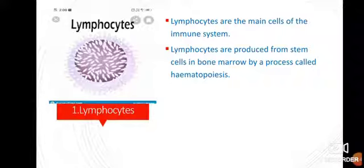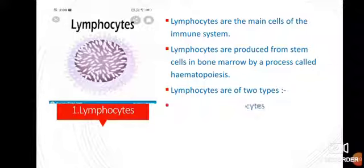Lymphocytes have a large nucleus, visible in diagrams and photographs as a large circular nucleus. They perform important functions in the immune system. Lymphocytes are of two types: B lymphocytes and T lymphocytes.